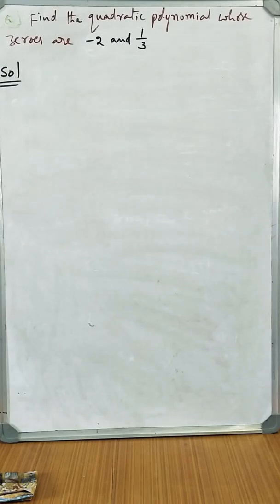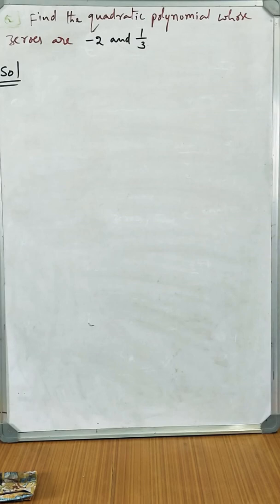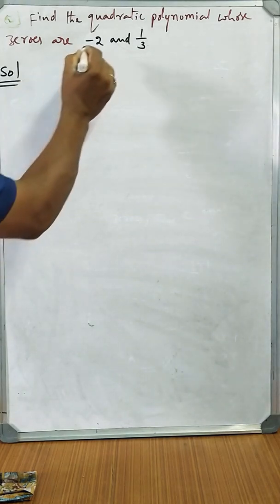Good morning students. Welcome to 1g math channel. Today I have taken a question from the polynomials. The question is find the quadratic polynomial whose zeros are -2 and 1/3.